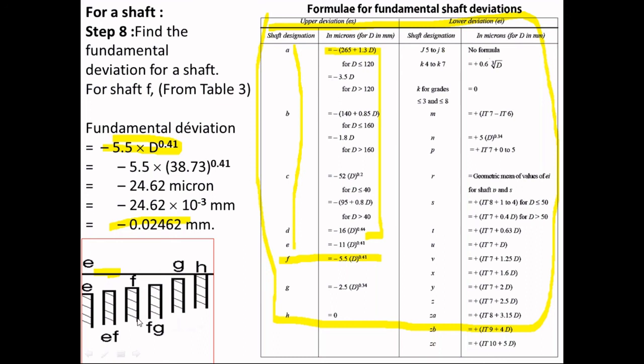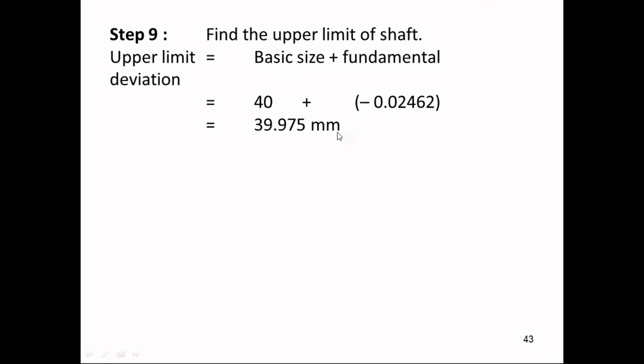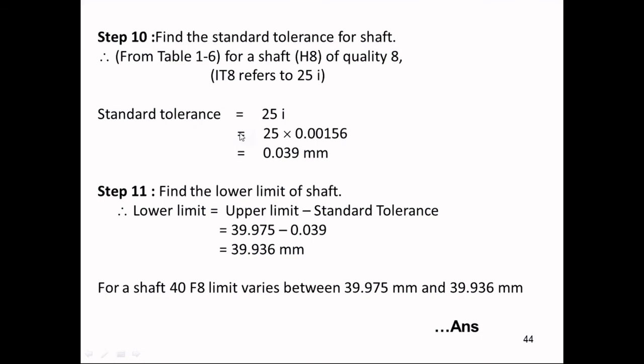The upper limit is calculated as basic size plus the fundamental deviation. The standard tolerance is again IT8, which equals 25i, giving 0.039 mm similarly. In this fashion we can get both the upper and lower limits. So for the 40f shaft, both limits can be found out using this approach.